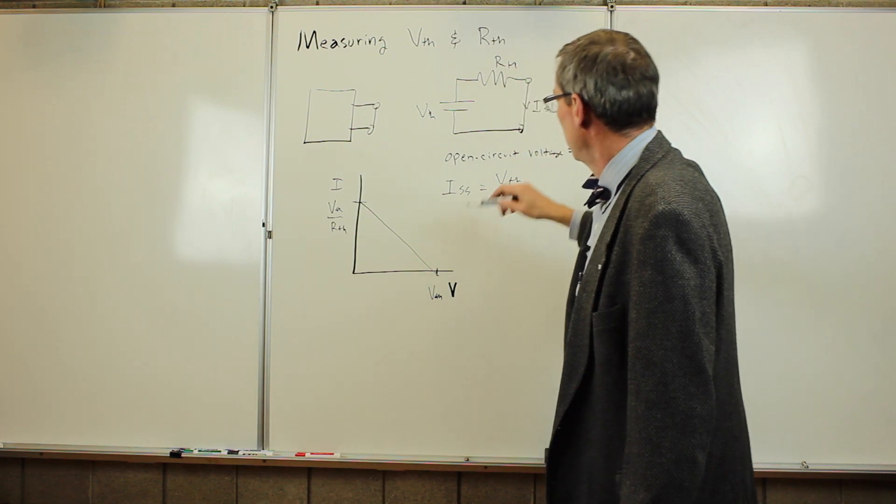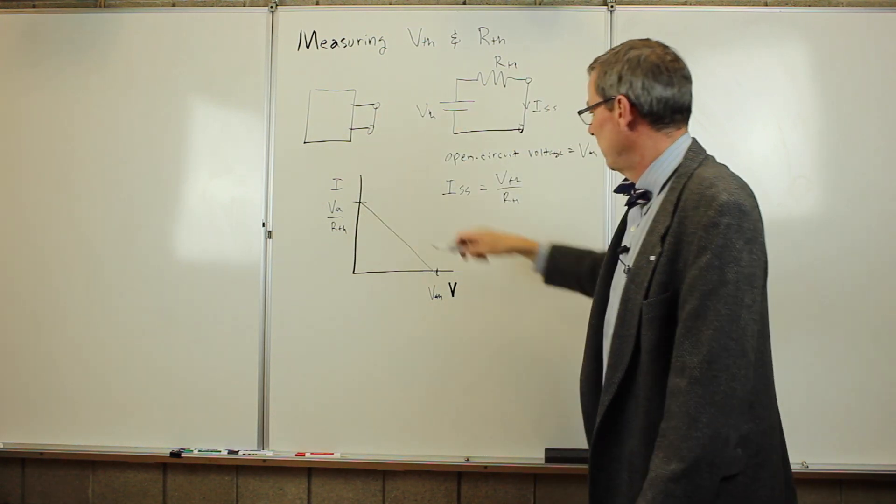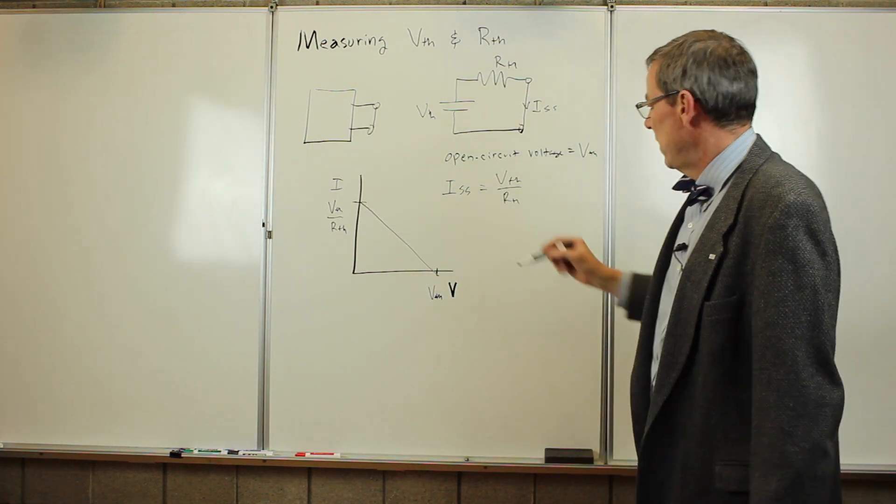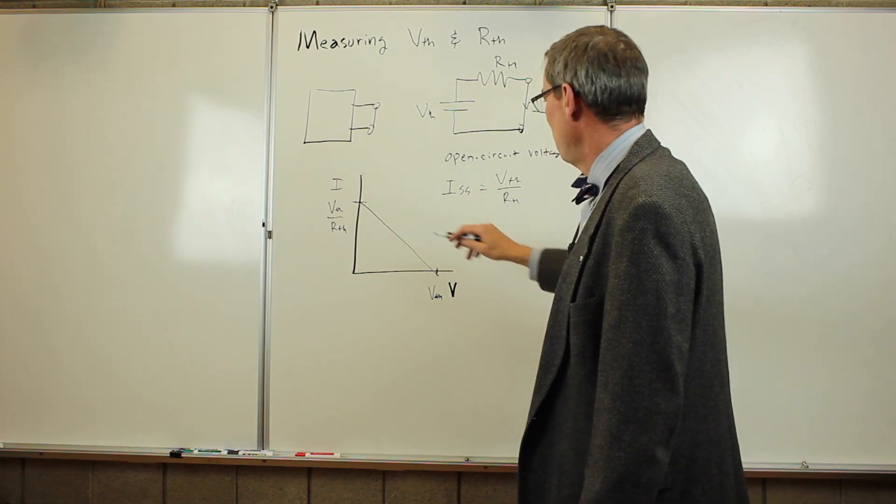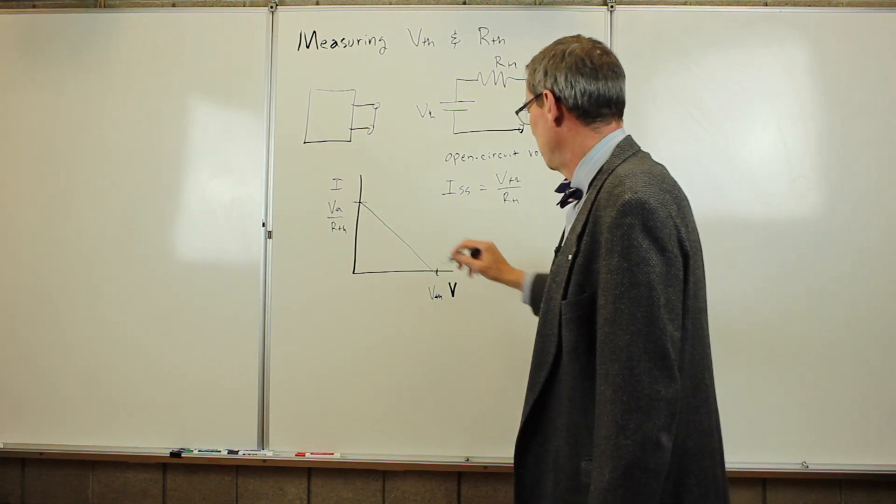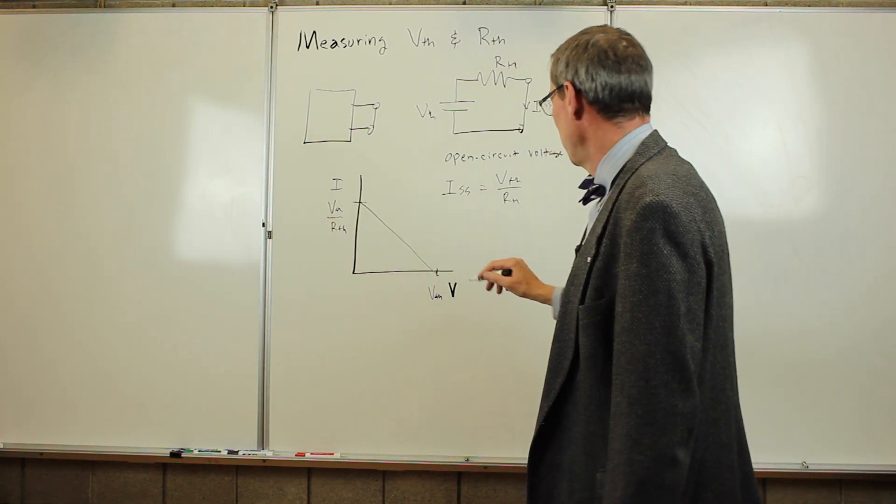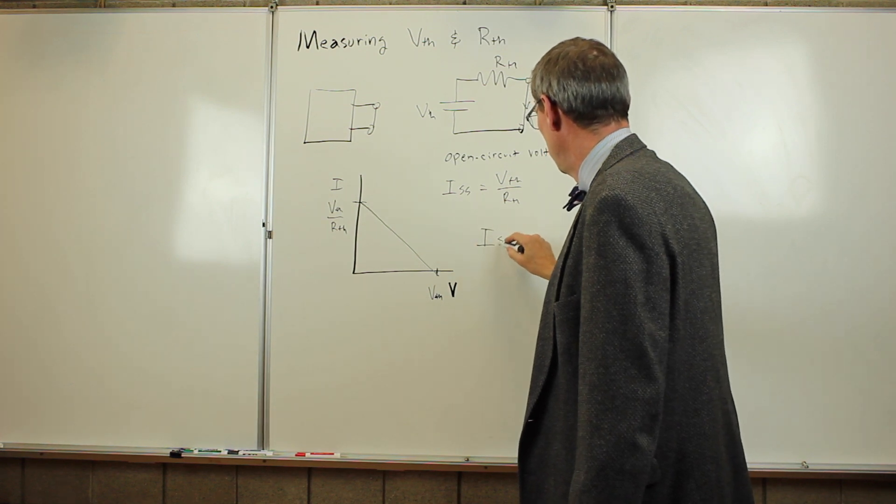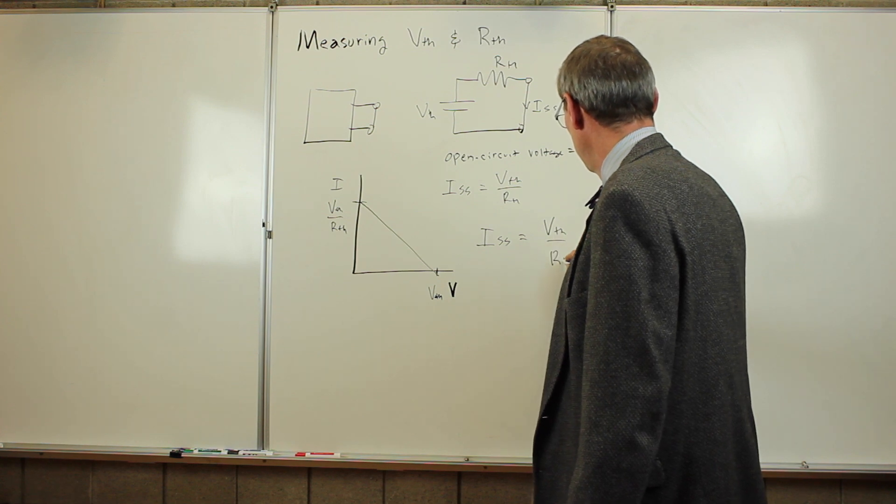And that's the IV curve. So by measuring the short circuit current and the open circuit voltage, we've basically measured those two points on an IV curve. And now we just need to get the slope here. So that slope is going to give us the resistance.